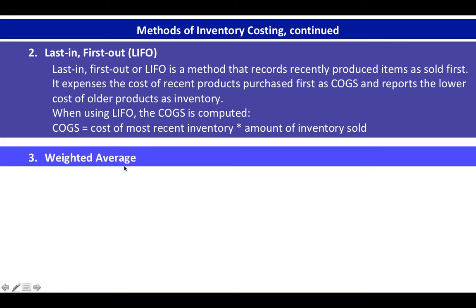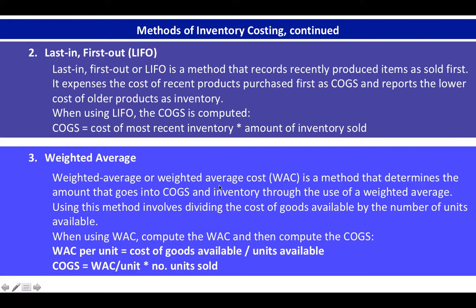Next is the Weighted Average, or Weighted Average Cost, acronym WAC. WAC is a method that determines the amount that goes into cost of goods sold and inventory through the use of a weighted average. Using this method involves dividing the cost of goods available by the number of units available. When using the weighted average, you first compute the weighted average cost per unit, which is the cost of goods available divided by units available, and then compute the cost of goods sold as the weighted average cost per unit times the units sold.